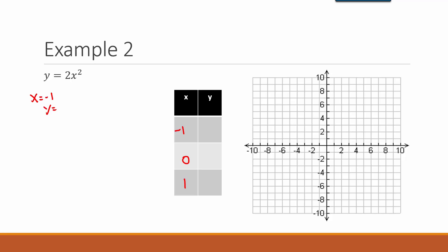Plugging those values in: when x equals negative 1, y equals 2 times negative 1 squared. Remember, the order of operations tells you to simplify the exponent first — negative 1 squared is positive 1, and 2 times 1 is 2. When x equals 0, y equals 2 times 0 squared. Zero squared is 0, and 2 times 0 is 0. When x equals 1, y equals 2 times 1 squared. One squared is 1, and 2 times 1 is 2.